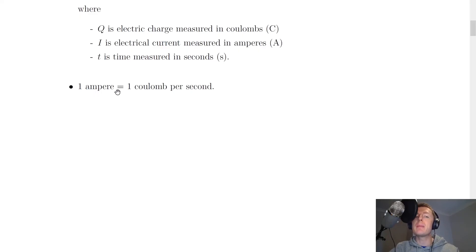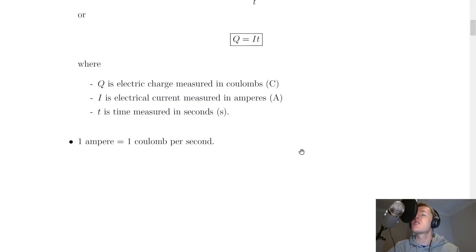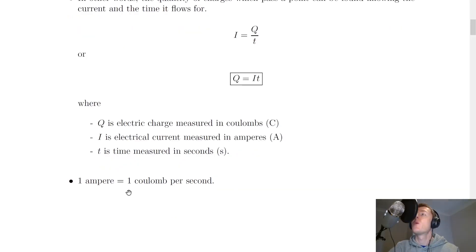One ampere equals one coulomb per second. This is a common multiple choice question — what is one amp equivalent to? You need to know it's one coulomb per second. You can work this out from the equation: I equals Q over T, so one ampere equals one coulomb divided by one second, i.e. one coulomb per second. It's worth remembering that.